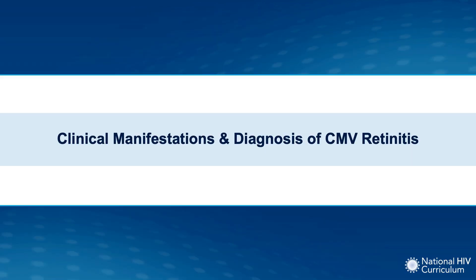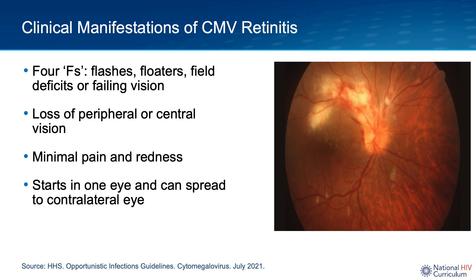The clinical manifestations of CMV retinitis include the four Fs: flashes, floaters, field deficits, or failing vision. Depending on the location of the retinal lesion, patients can have changes or decreased peripheral or central vision. Patients may have minimal pain or redness in their eye, and CMV retinitis can start in one eye and then spread to the contralateral eye.